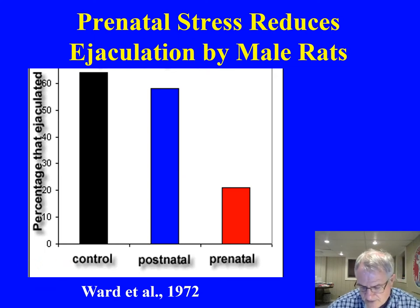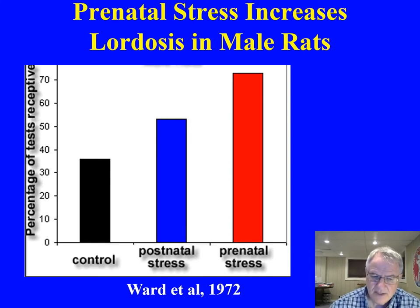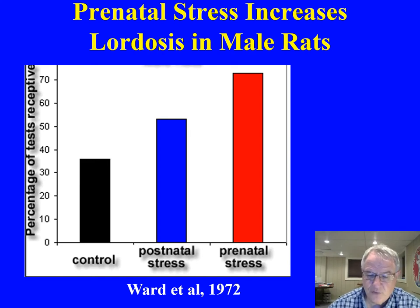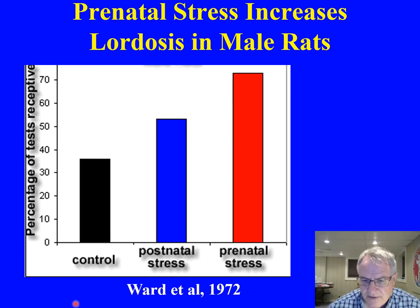Ward also examined what happens when we measure the degree to which prenatally stressed males show female-like behavior — their ability to show lordosis, that intense arching of the back seen in normal females. When those prenatally stressed animals are challenged with estrogen, they exhibit very high levels of lordosis behavior in contrast to controls.